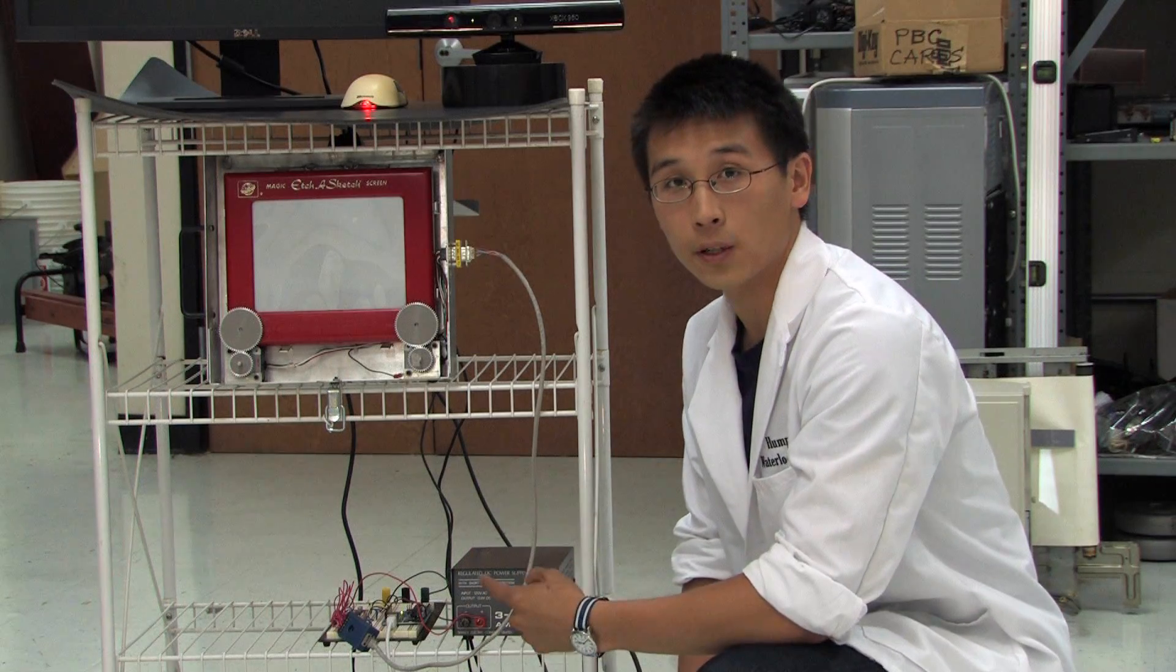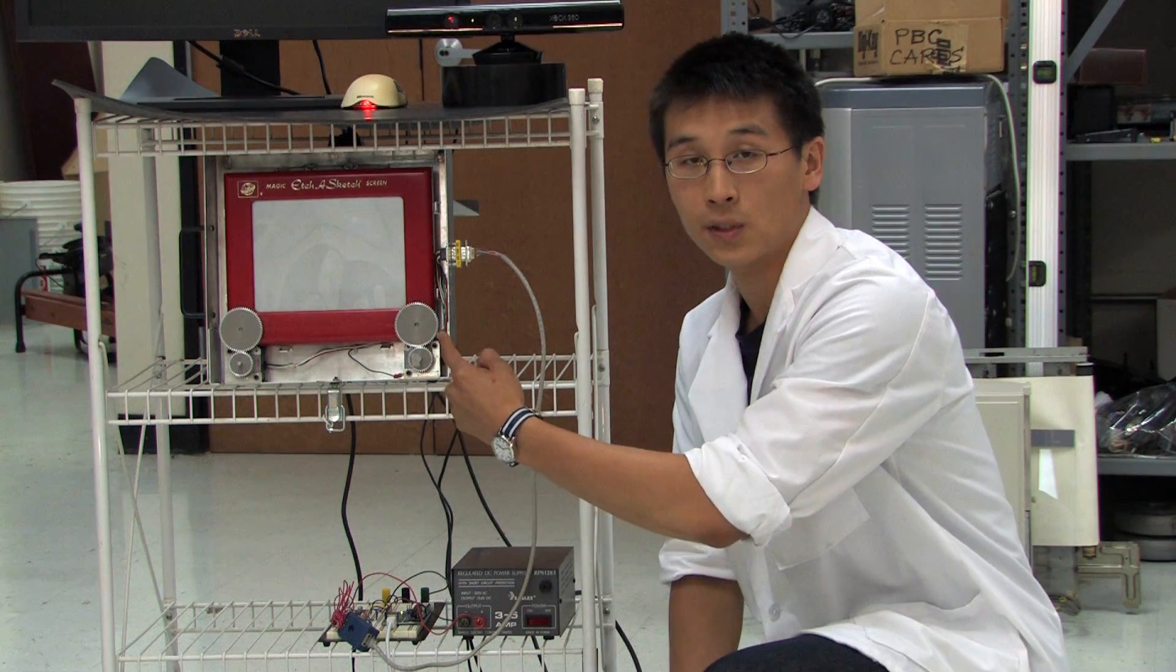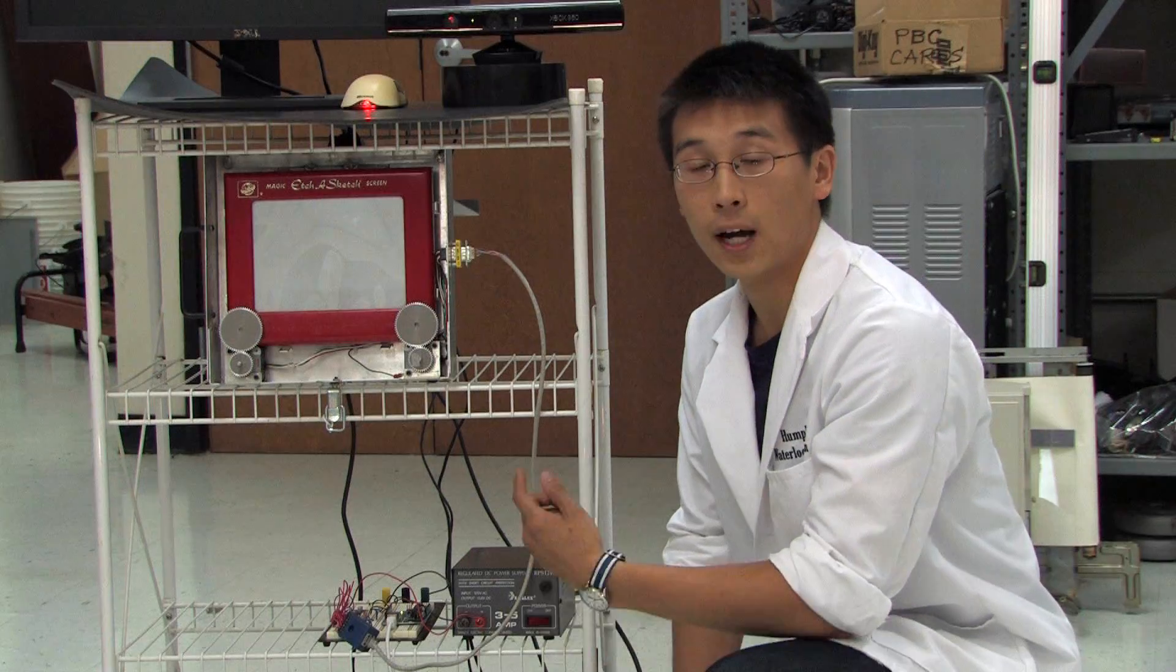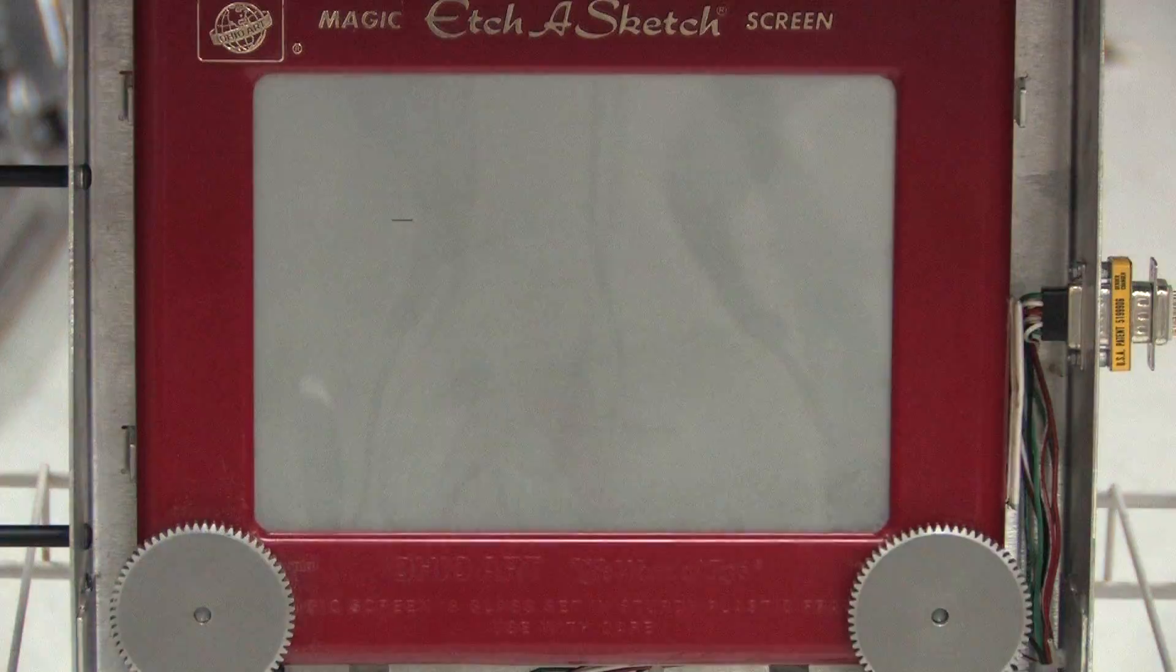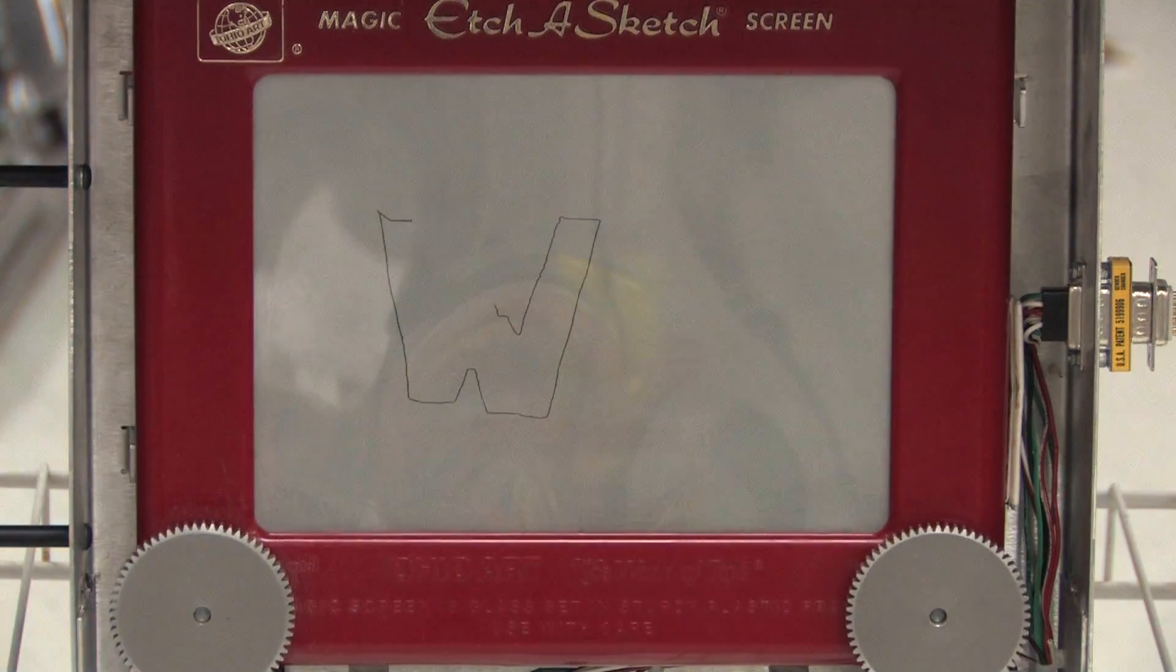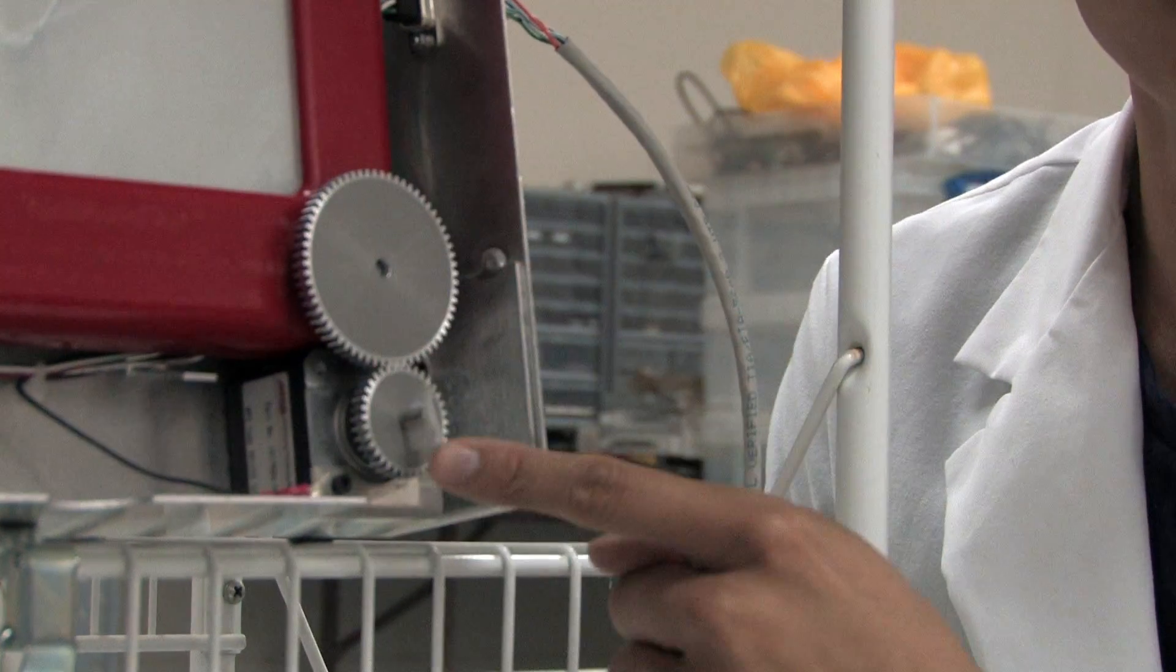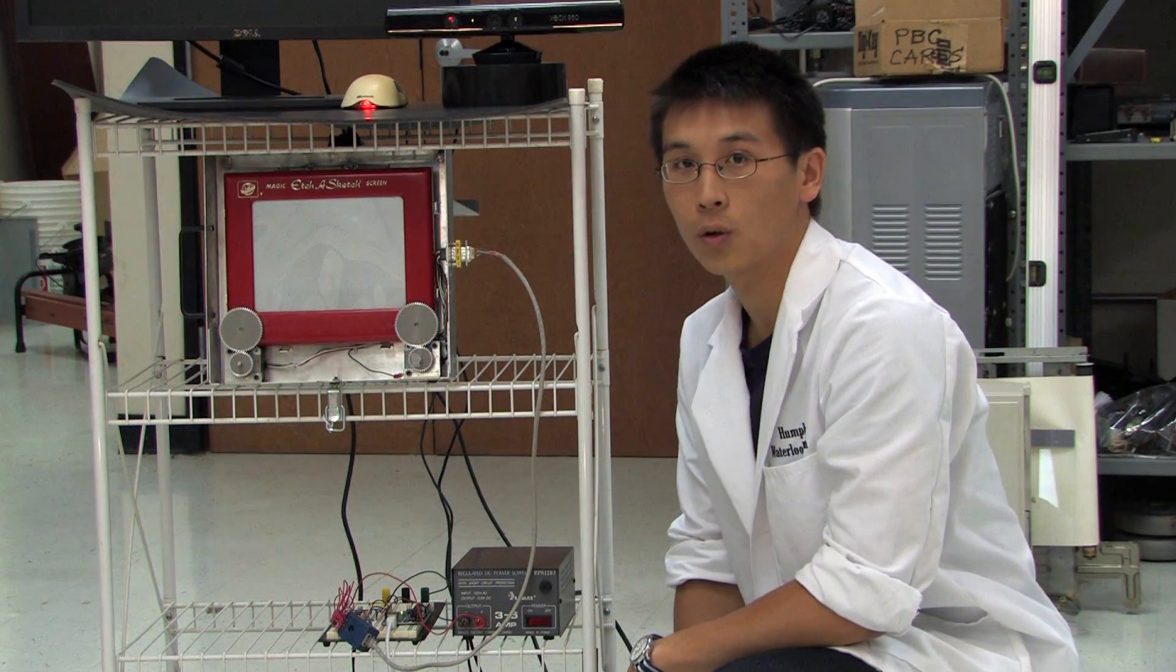We use the Arduino to output digital pulses, and every time these motors receive one of these pulses, they rotate 1.8 degrees. So, by outputting pulses at different frequencies, we can accurately control the movement of these motors. Then, when we connect the knobs at the edge of sketch to the motors, we can accurately control what we want to draw.